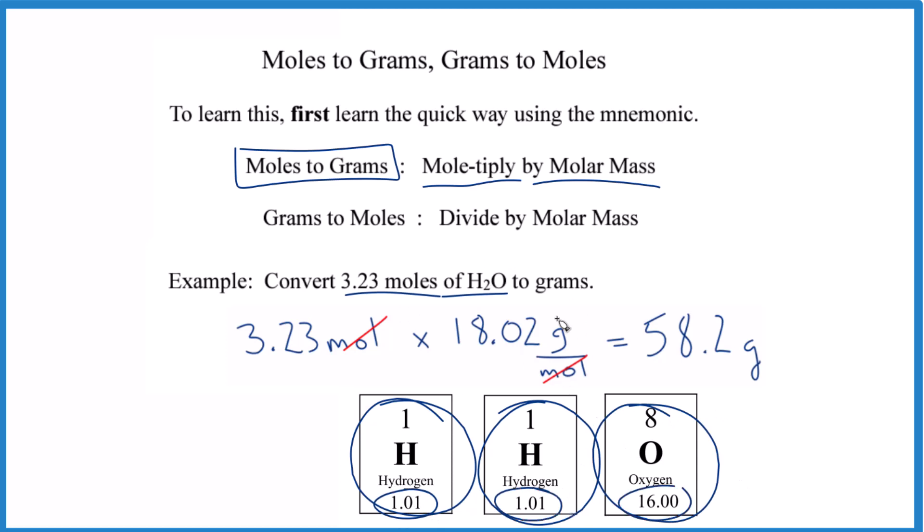That's where the molar mass 18.02 came from, and the units are grams per mole. That way we know we've got moles on top and the bottom, they cancel out. We've got grams. We know we've got the right answer because it's in grams here.